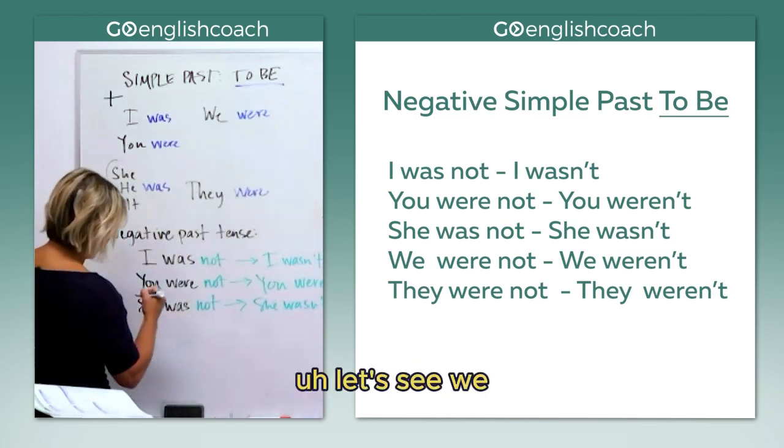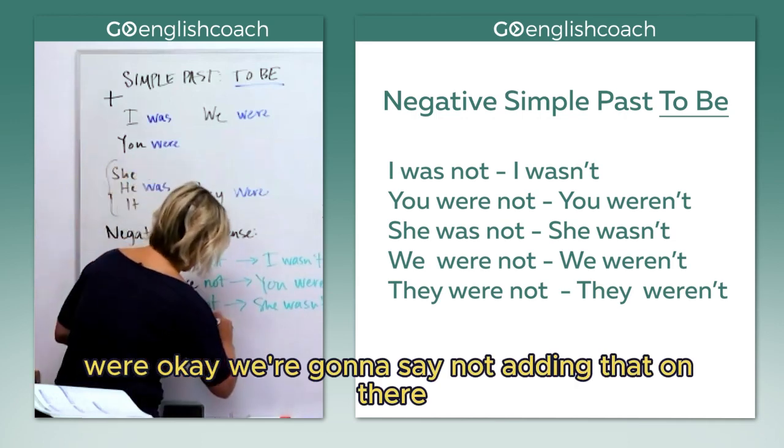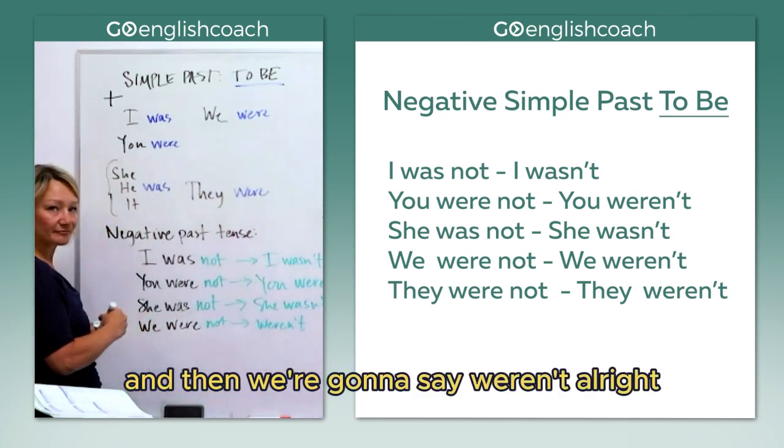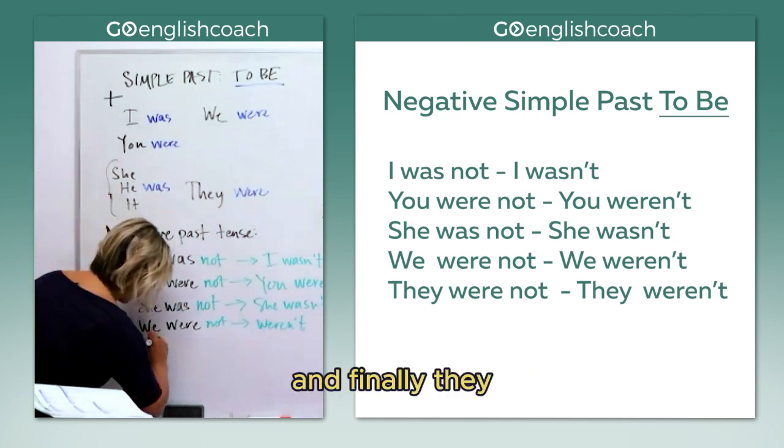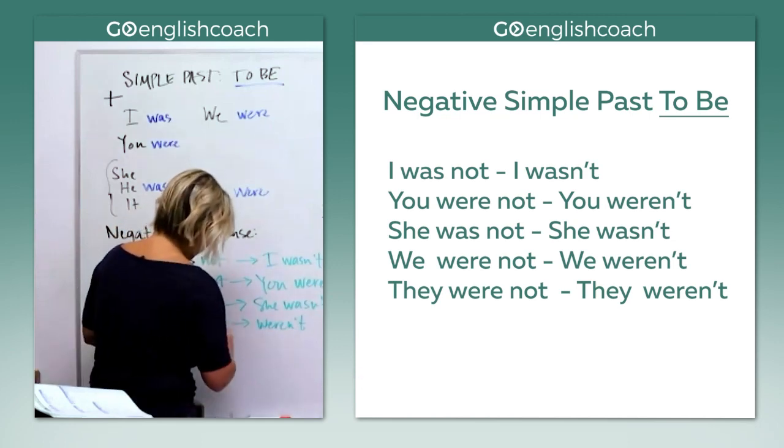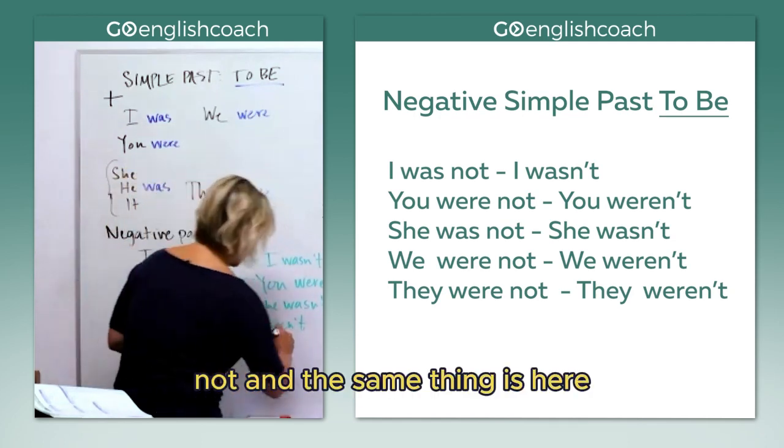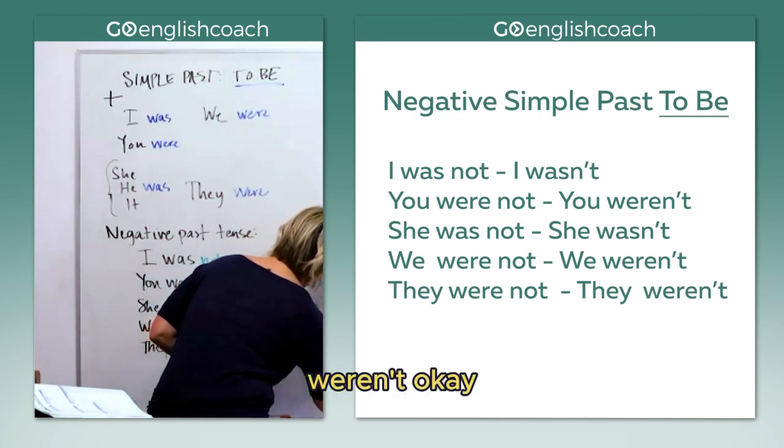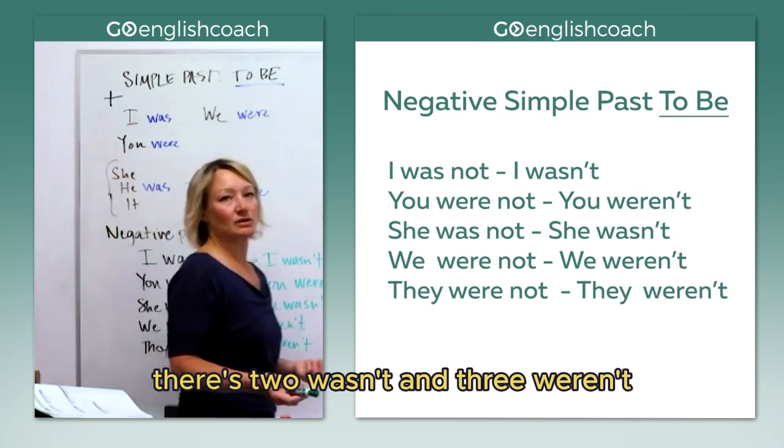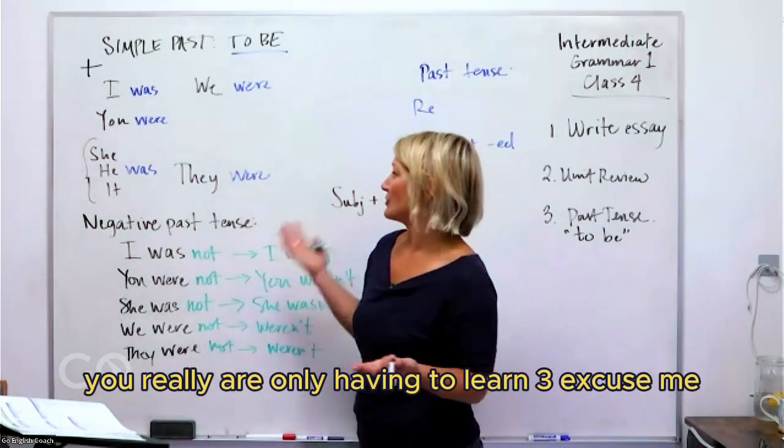We were - we're gonna say 'not', we're adding that on there, and then we're gonna say 'weren't'. And finally, they were not - and the same thing is here, weren't. So you can see in three cases they are the same. There's two wasn'ts and three weren'ts, so learning just when to use those is really - you really are only having to learn two different words: wasn't and weren't, and then practicing when to use those.